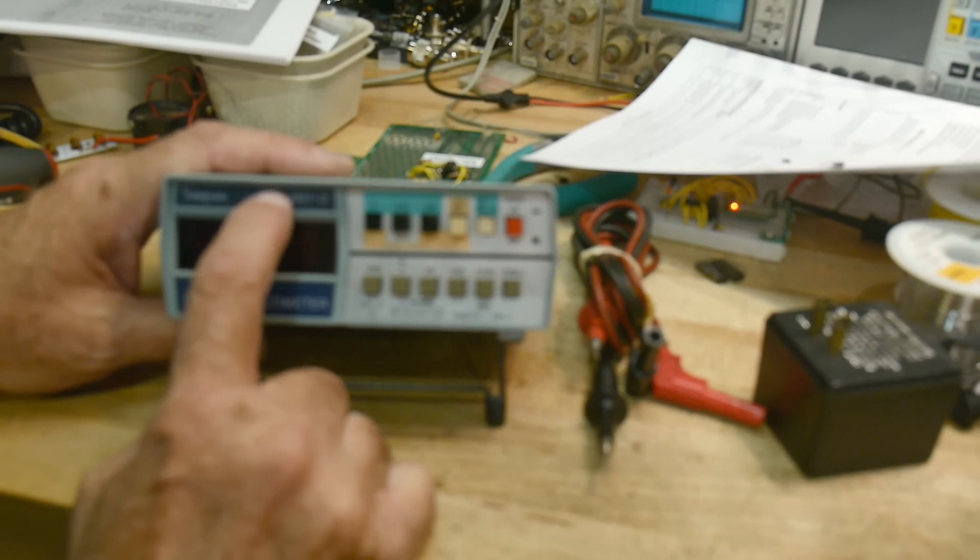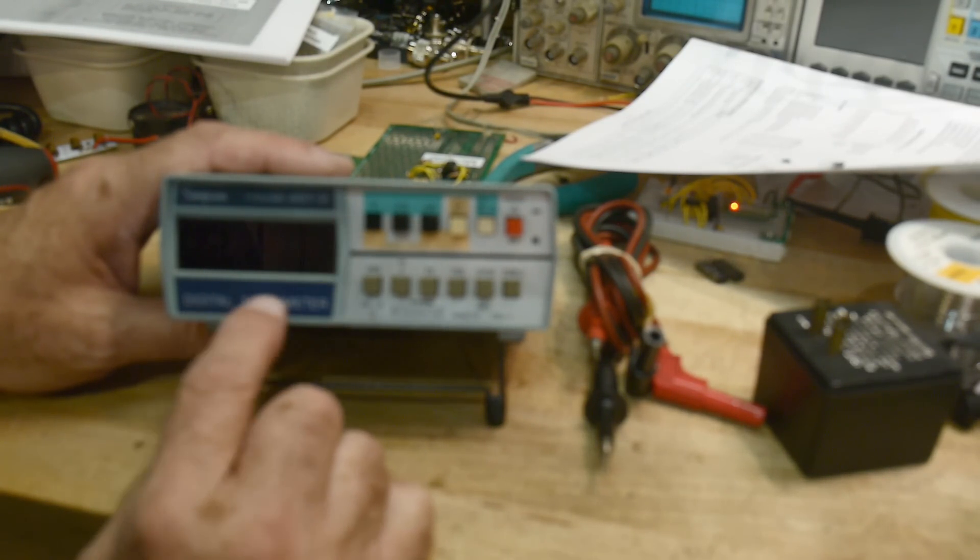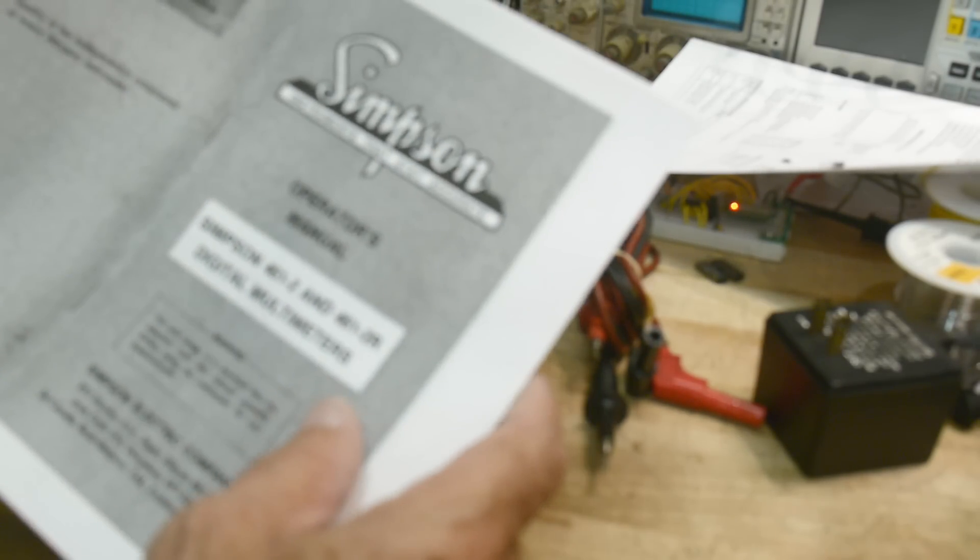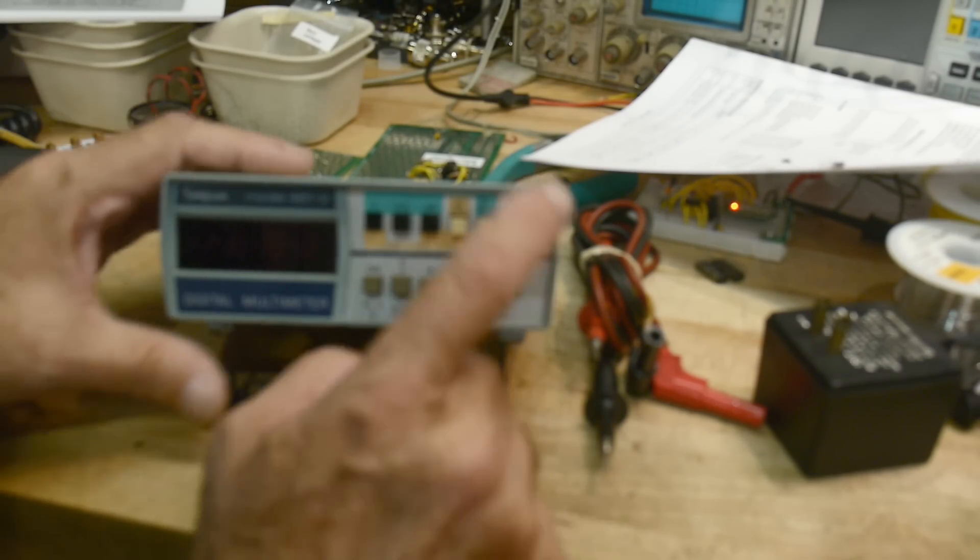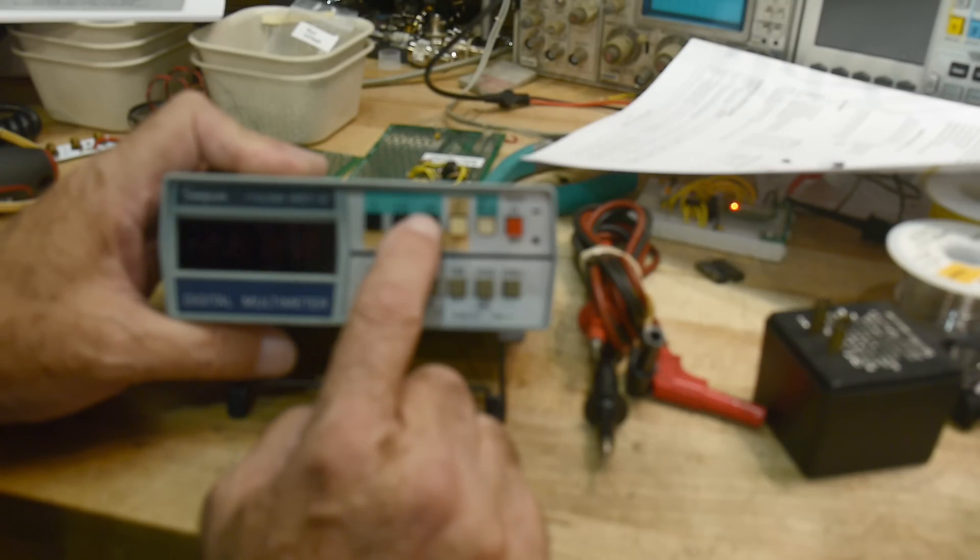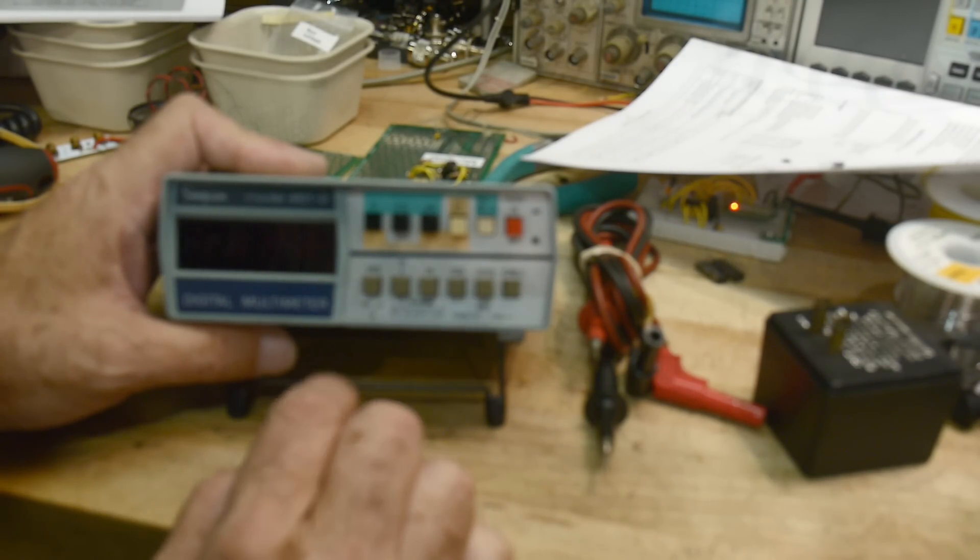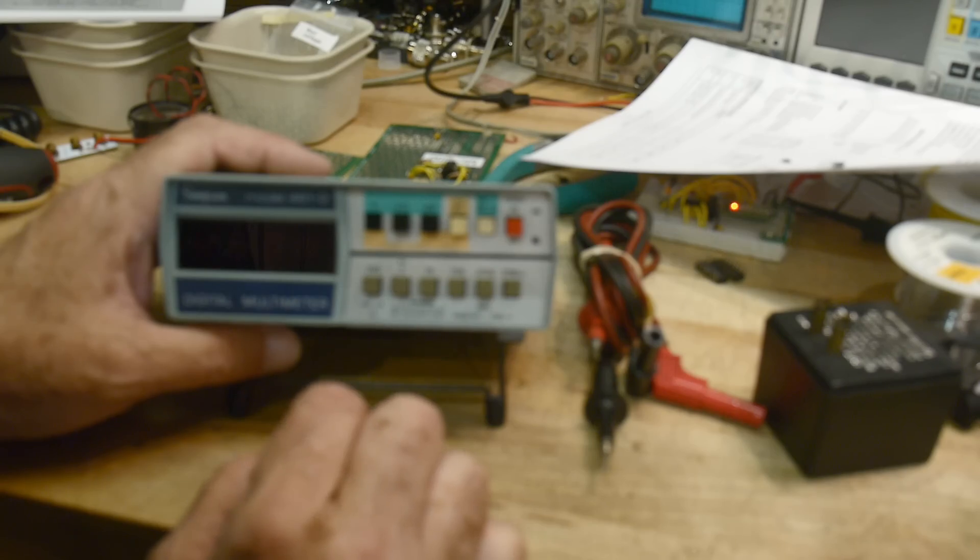But yeah, it is a model 461-2 digital multimeter. I've got the manual for it, printed it out. So it's got volts, ohms, milliamps, AC, DC. It's not auto-ranging it looks like, manual ranging.